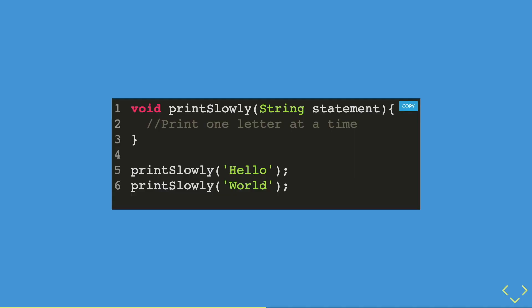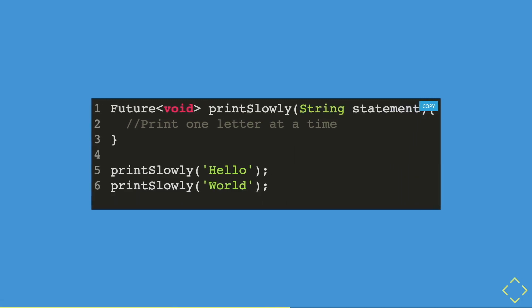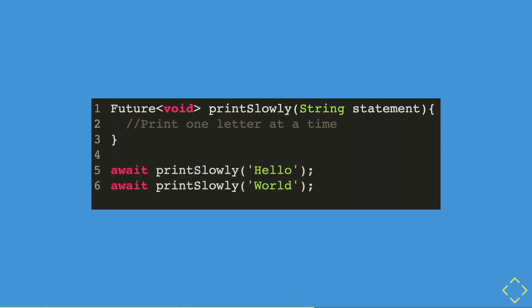With the same print slowly function, we will make it an asynchronous function where we will add the future type to our void function. When you use the future type function, you have to add in the await syntax. I will explain it in the later part of this video.